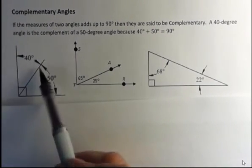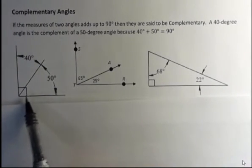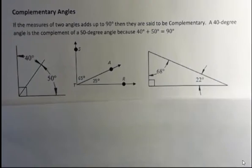And here's a picture of that. If I had a 40 degree and a 50 degree, those two would form that right angle. Again, we assume a right angle when we see that box. This is another example of complementary angles.